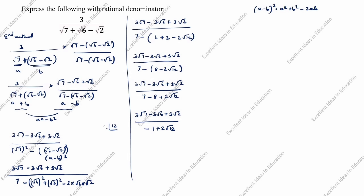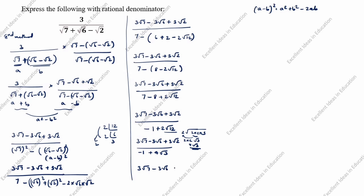Simplifying 2 root 12: taking LCM, 12 equals 2 times 2 times 3, so we take one 2 outside giving 4 root 3. The denominator becomes minus 1 plus 4 root 3. Since root 3 is irrational, we rationalize again by multiplying by (minus 1 minus 4 root 3) divided by (minus 1 minus 4 root 3).